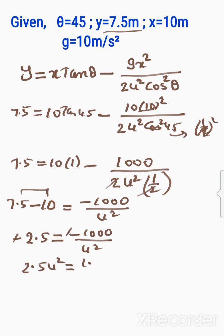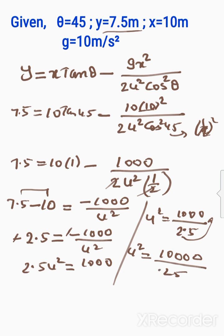The negatives cancel. Bringing u² to this side: 2.5u² equals 1000. So u² equals 1000 divided by 2.5. Moving the decimal point, that's 10000 divided by 25.